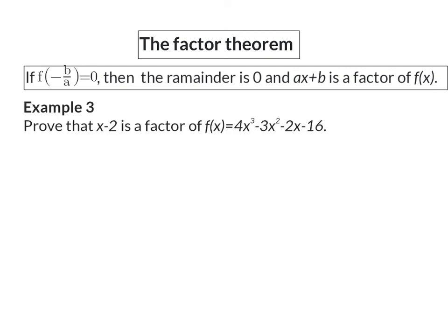Example 3. Prove that x minus 2 is a factor of the function. Here, we start off with the same steps for calculating the remainder. So, we take our divisor, x minus 2, and put it equal to 0, and solve x as 2.